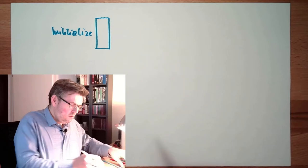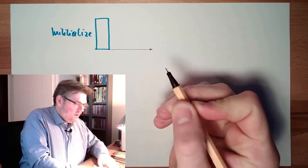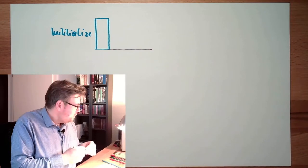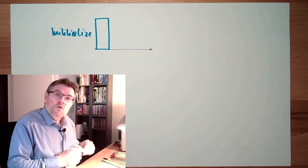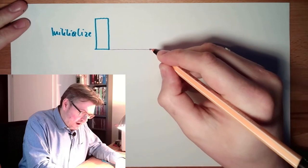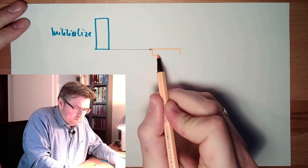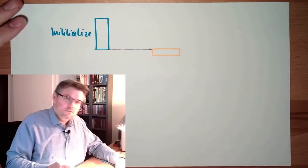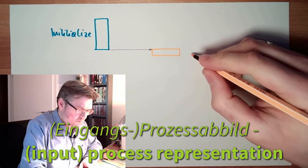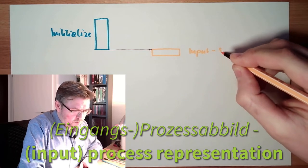Then if this initializing is done, we go over to the cycle, to the program cycle. The first thing which is done is that the inputs, the current inputs, there's a snapshot taken - input snapshot.